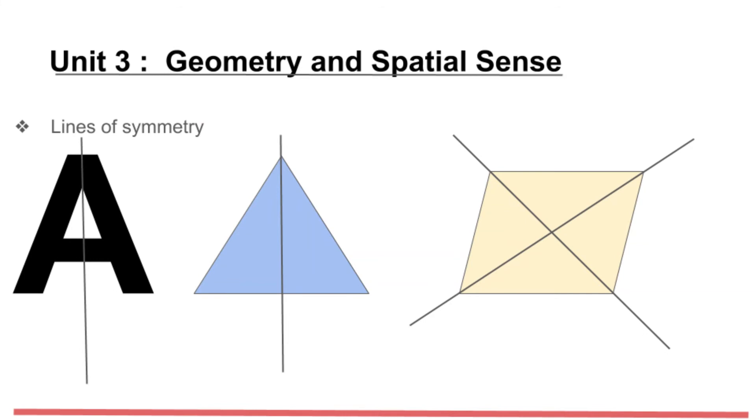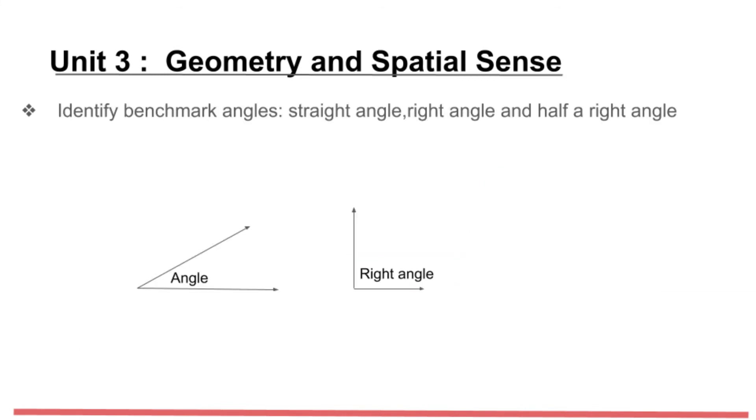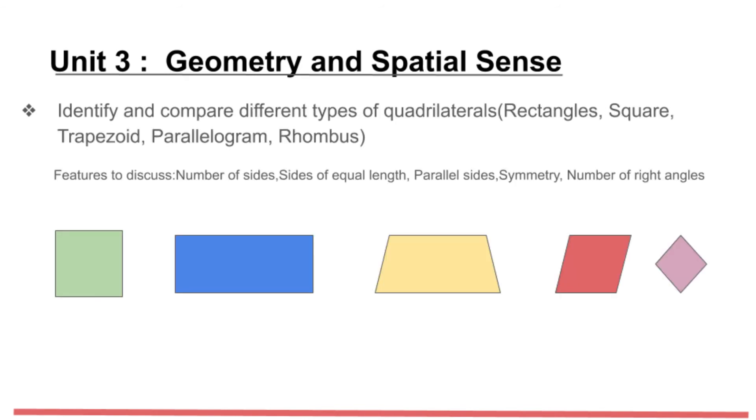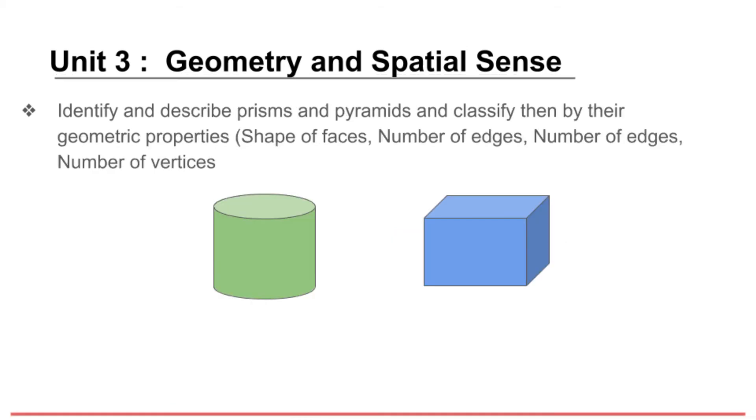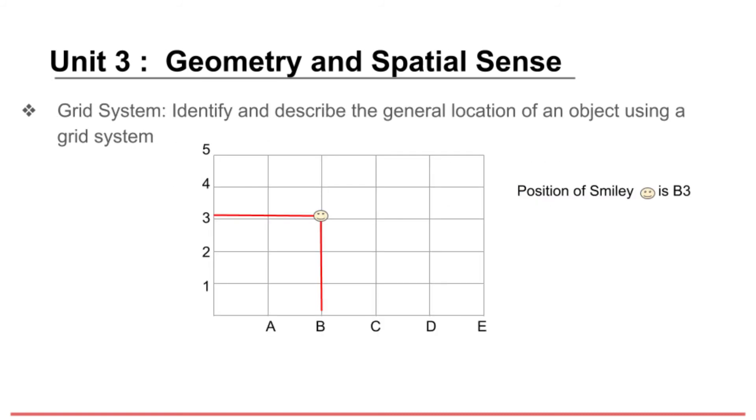In Unit 3, the concept of Lines of Symmetry is introduced. Students also learn about angles and identify and compare different types of quadrilaterals. Three-dimensional geometrical figures like prisms and pyramids are also covered in this unit. Students also learn to identify and describe the location of an object using a grid system.